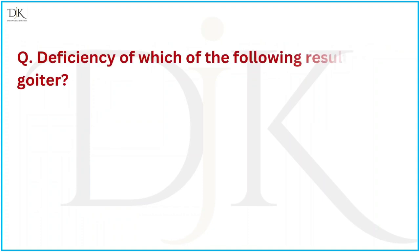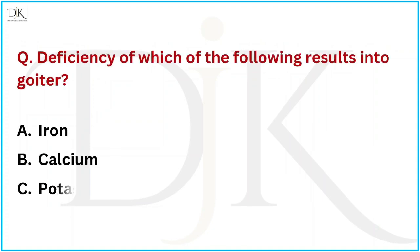Deficiency of which of the following results in Goiter? The right answer is Iodine.